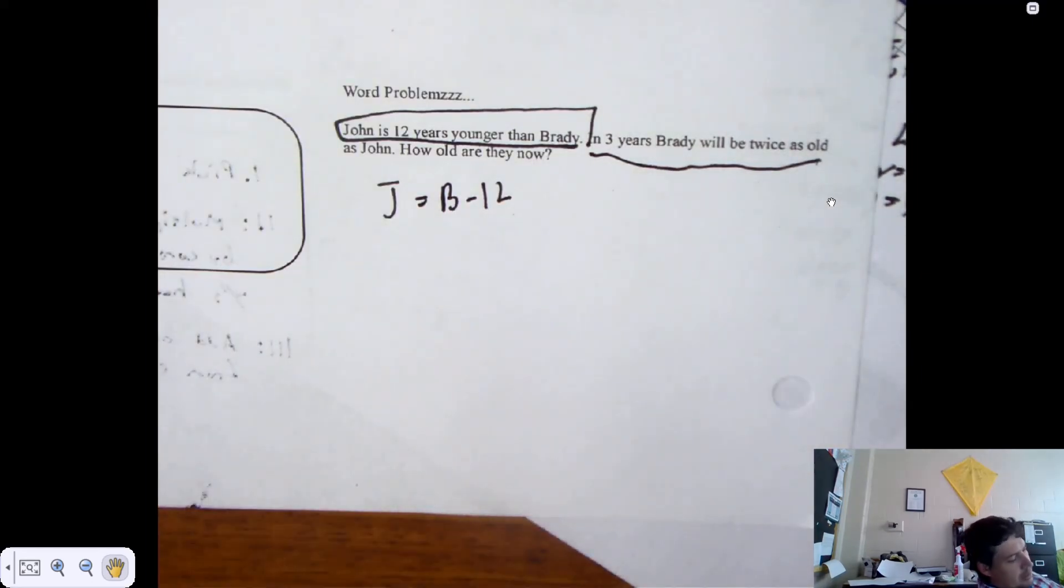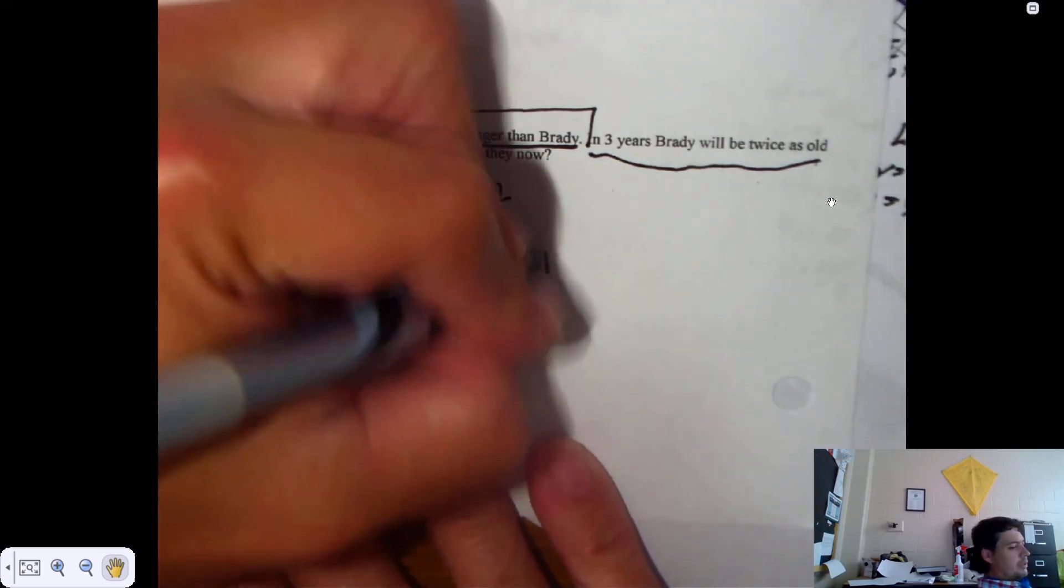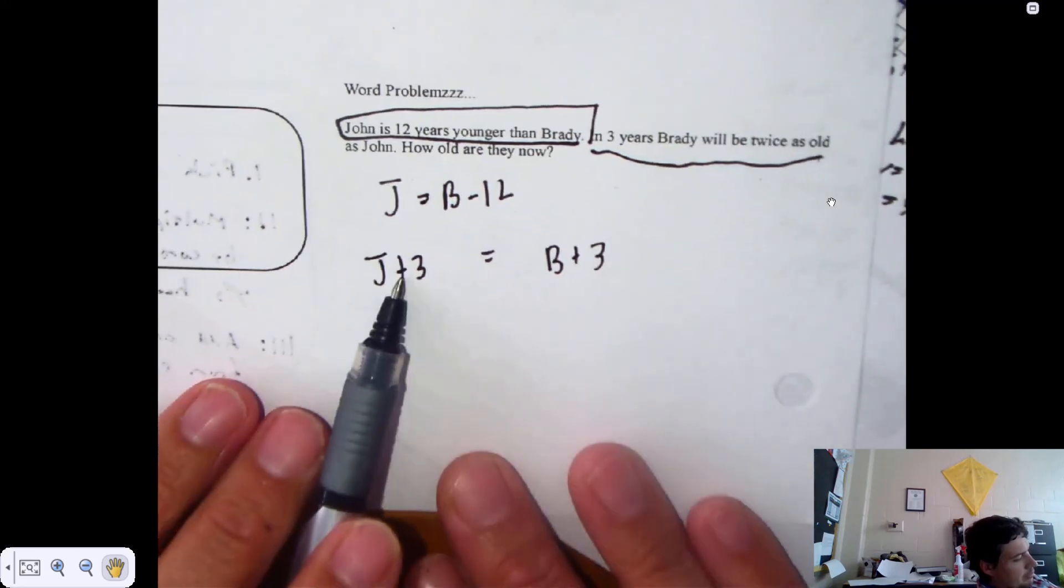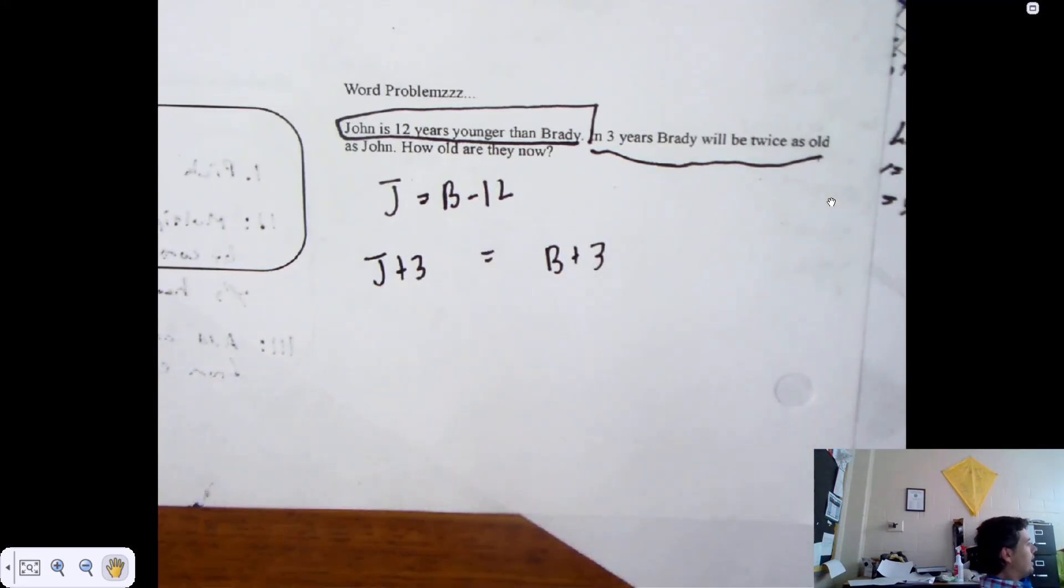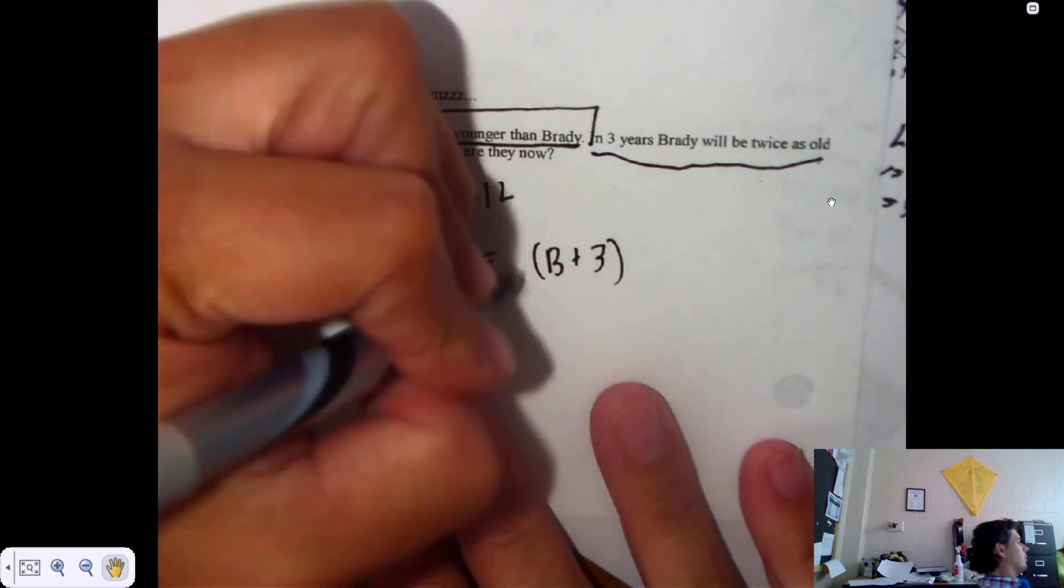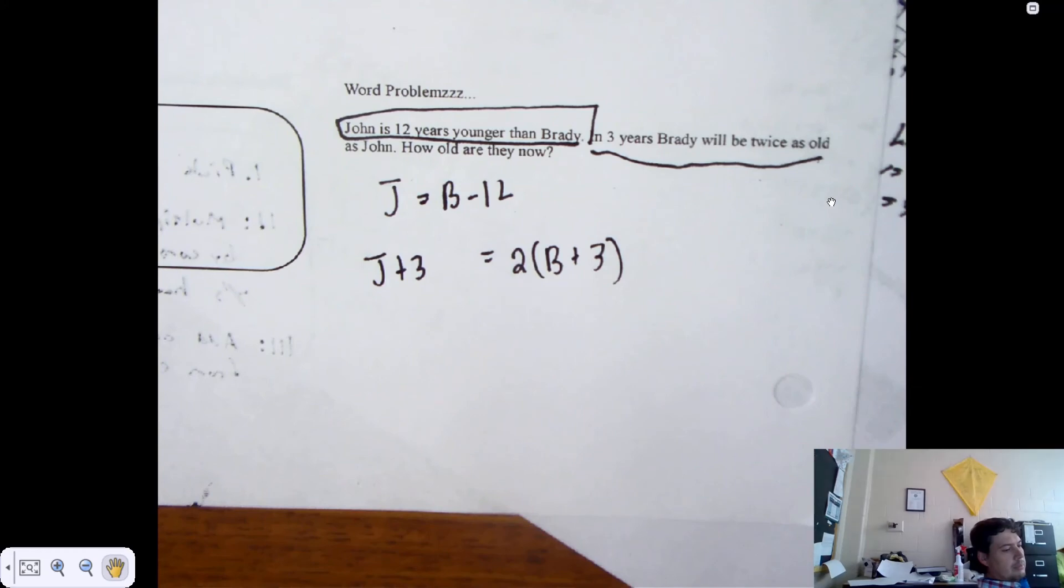This one over here gets some kids. In three years, Brady will be twice as old as John. Well, are both kids aging by three years? So you have to actually do that first. John plus 3 equals something about Brady plus 3. Because they both age by three years. Brady plus 3 is multiplied by two. Not just the B. All of it. But they have to age first before you worry about the doubling. You can't just say 2B plus 3 without parentheses because it will not work. I don't think it will.